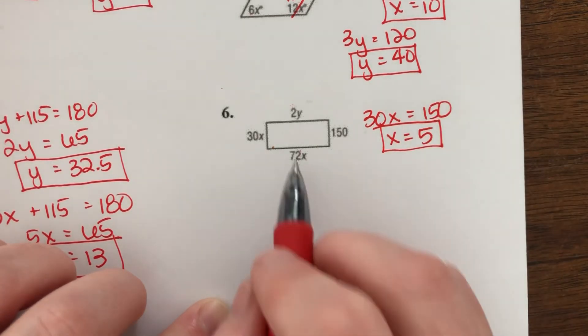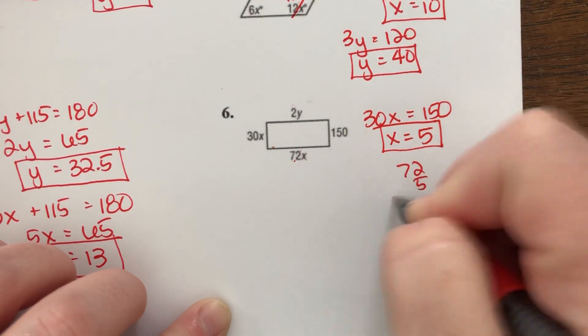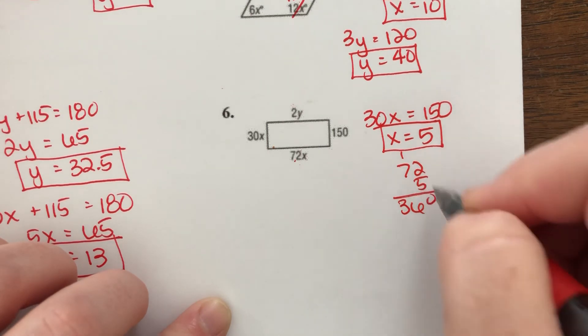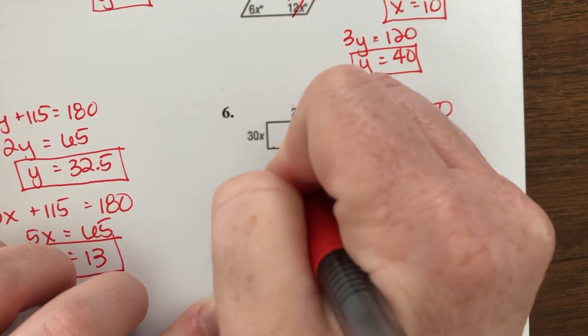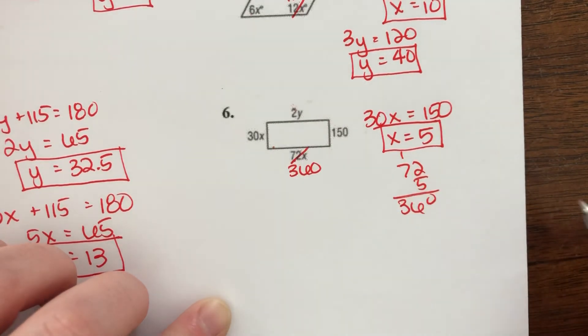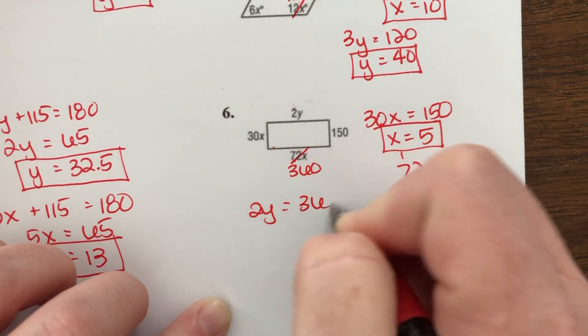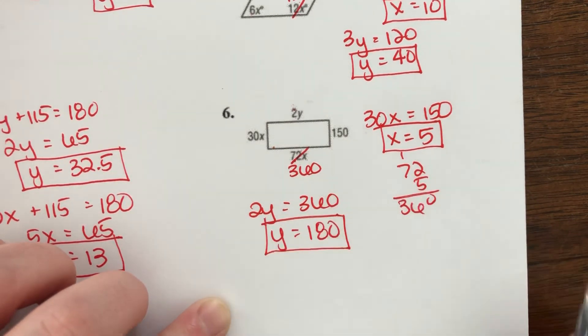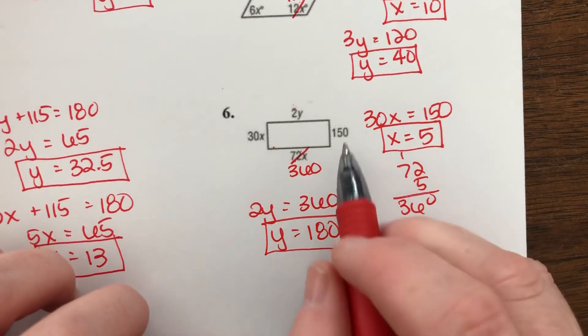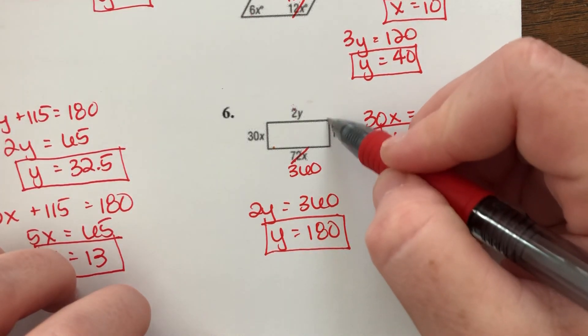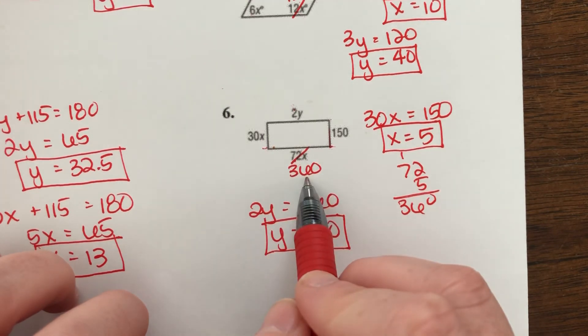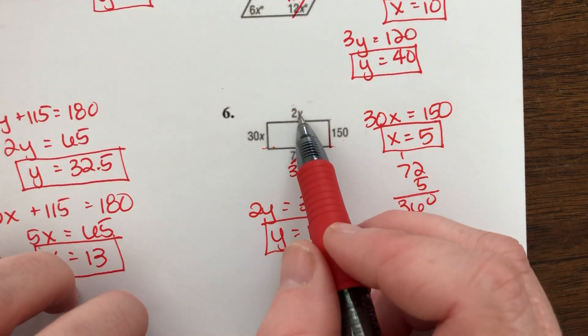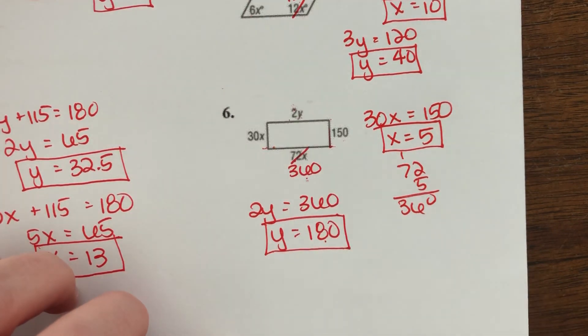So if that's the case, 72 times 5 equals 360. So 2y has to equal 360, which means y would have to equal 180. Makes sense. If this whole side is 150 and it's little, it makes sense that this long side would be 360, over double this. And if this is 360, y would have to be 180 for two of them to equal 360.